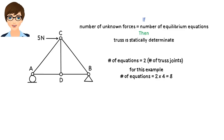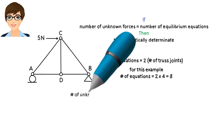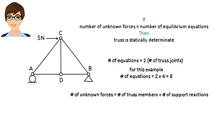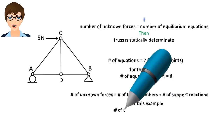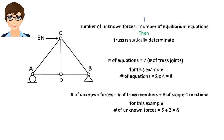What about the number of unknown forces? The total number of unknown forces in a truss equals the number of its members plus the number of its support reactions. Our truss has five members, each carrying an axial force, so there are five unknown member forces. Since the structure rests on a pin and a roller, there are three unknown reactions — the pin provides two and the roller one. Therefore, the total number of unknowns is five plus three, or eight. Since the number of unknowns equals the number of equations, the truss is statically determinate.